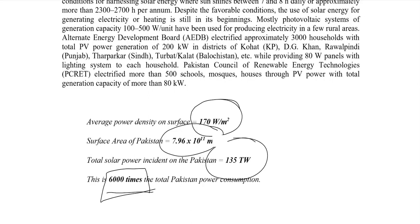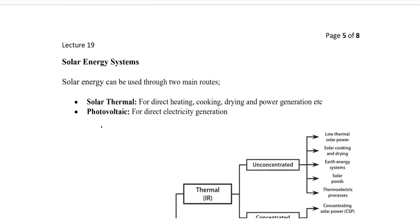Now let's talk about the solar energy systems themselves. There are mainly two types: solar thermal and photovoltaic. In solar thermal, we look at direct heating, cooking, drying, and power generation. For photovoltaic — commonly called PV technology — it is used for electricity generation. So these are the two main categories of solar energy systems.